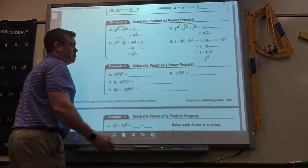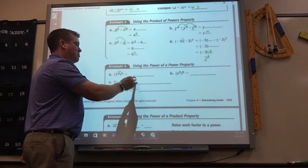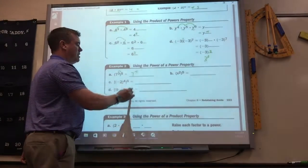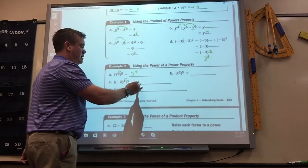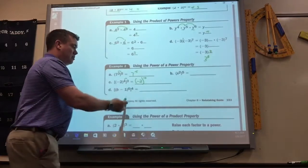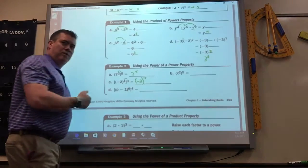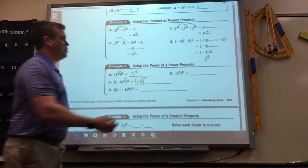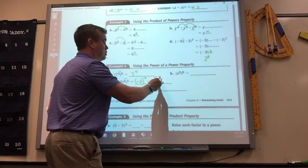Power of a power, you multiply, 7 to the 15th. Multiply, negative 2 to the 12th. Which would make it, since it's an even, you could write it 2 to the 12th.